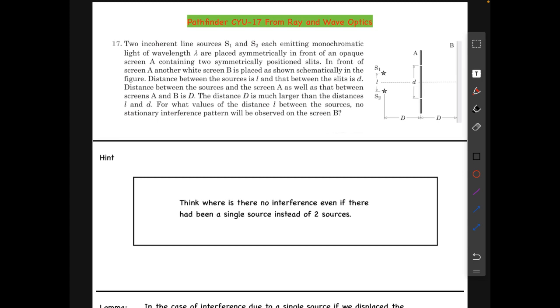In physics, what we assume is that whenever there are two different origins for light, they can never be coherent. This is a general assumption we use in most of our problems unless otherwise stated, and that happens in the case of lasers and stuff, but we don't need it here.